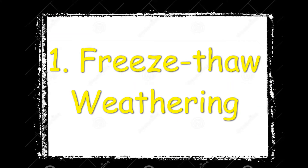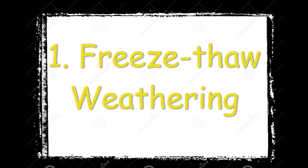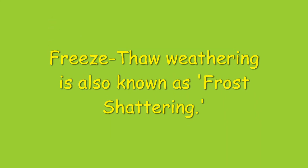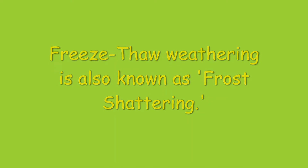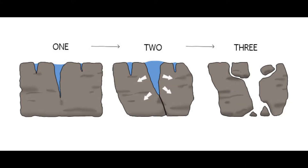Freeze-thaw weathering, also known as frost-shattering. The steps are: water fills a crack in a rock. Next, the crack in the rock is made wider when the water freezes. Finally, the rock breaks into several pieces. That's what we call freeze-thaw weathering.